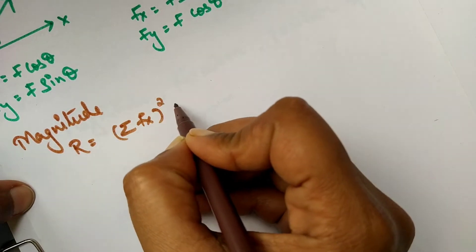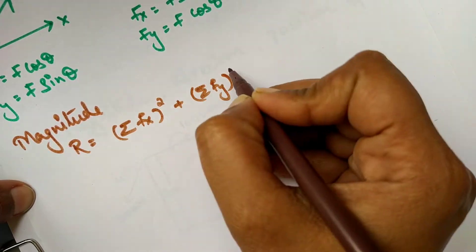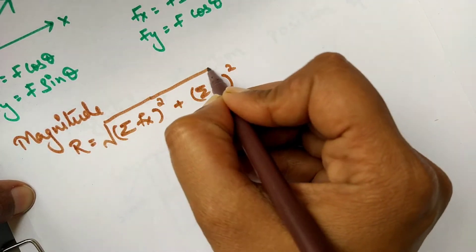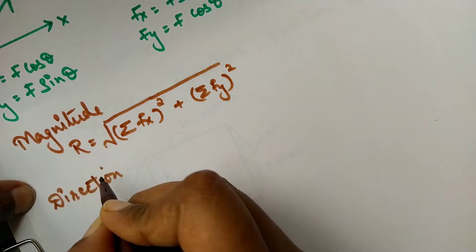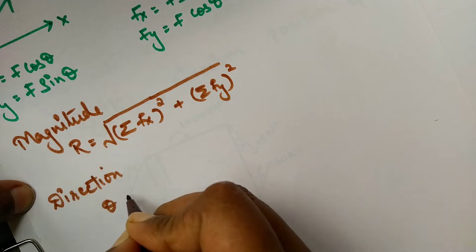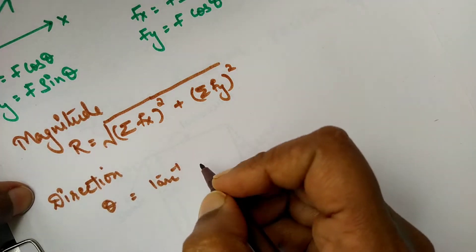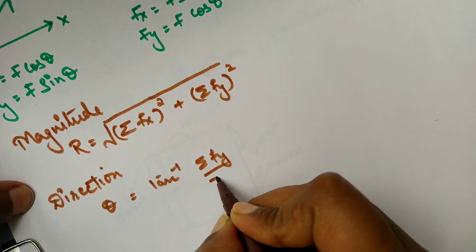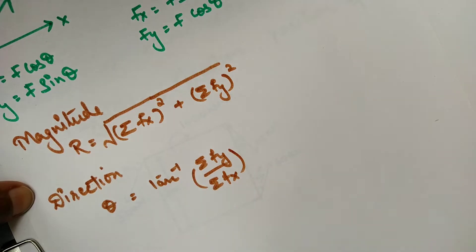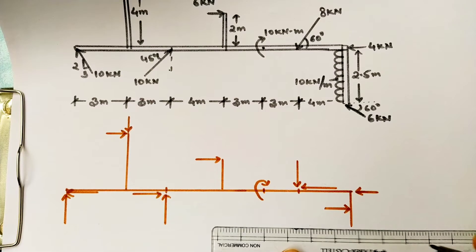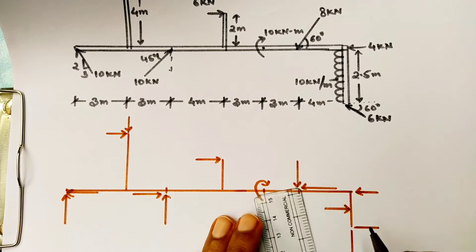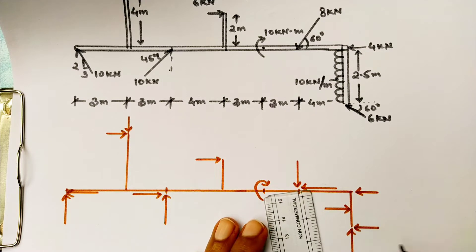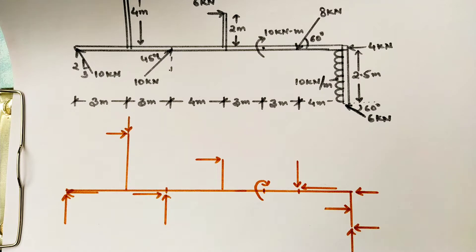Here we are writing all the formulas we are going to use in this question right at the start, because two marks are assigned for this particular step. The resultant formula is √(ΣFx² + ΣFy²), and the direction formula is also noted. The next step is to resolve all the forces and write their components.